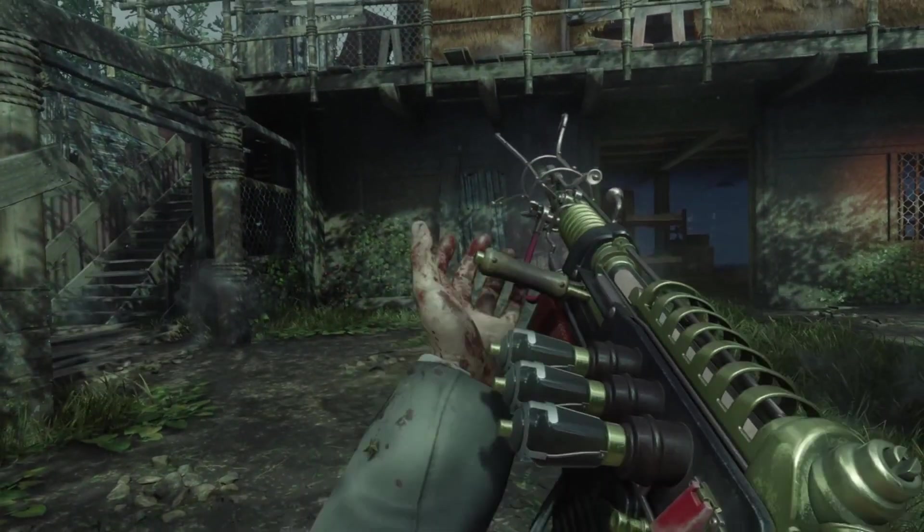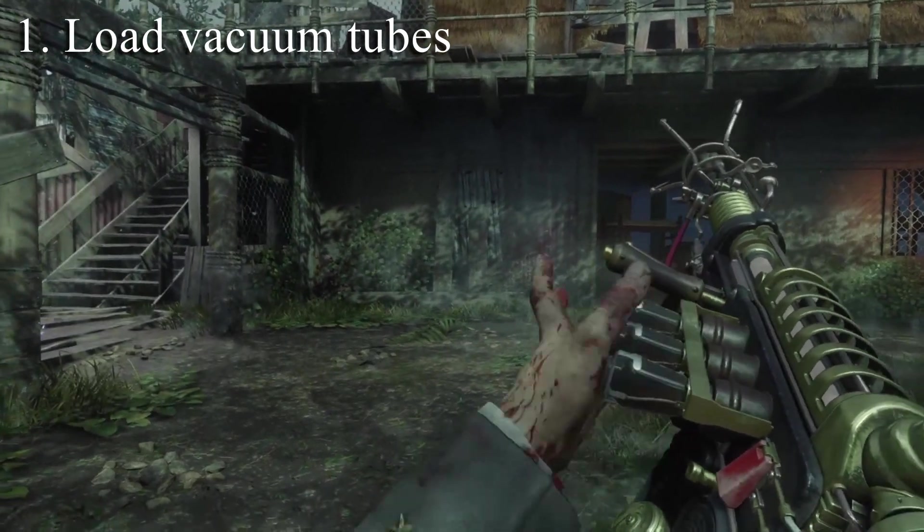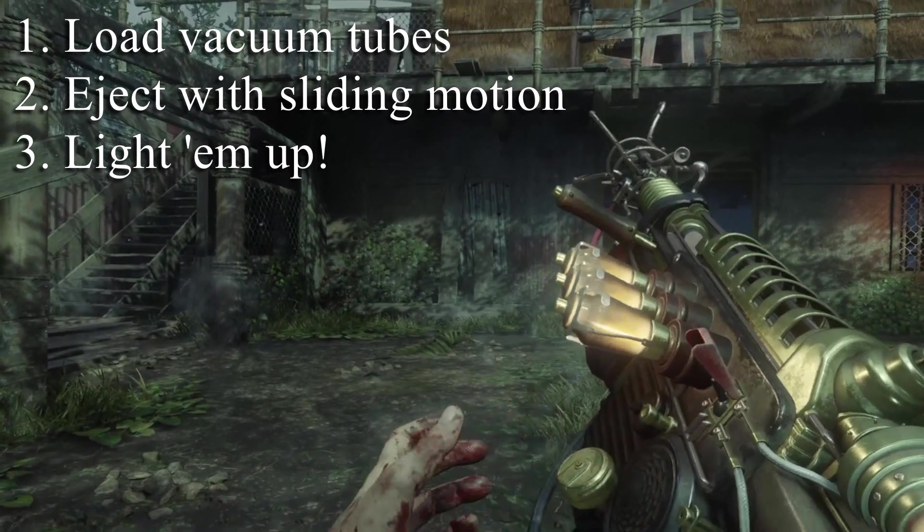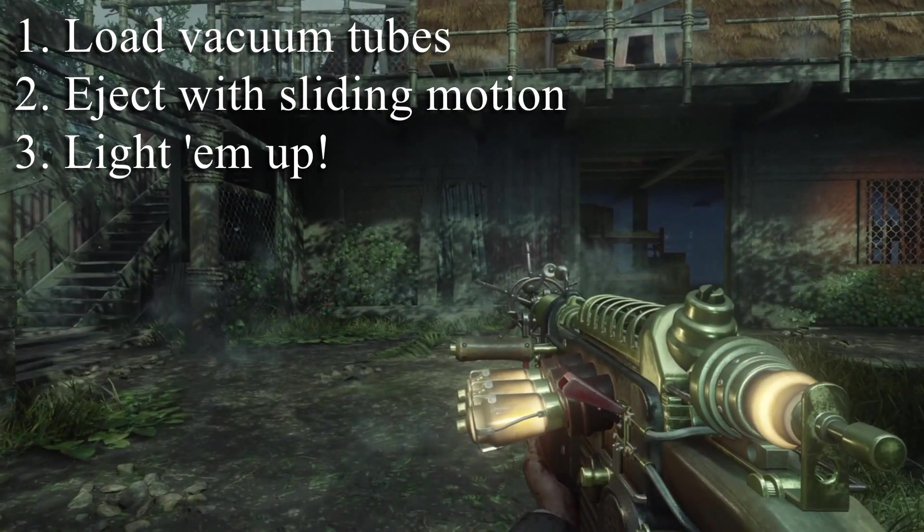In summary, we need to: one, load the vacuum tubes; two, eject them with a sliding motion; and three, light them up with the red switch. Let's start with ejection and loading.